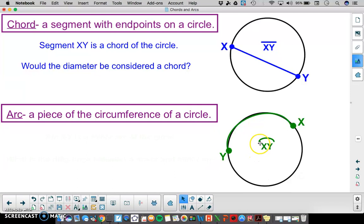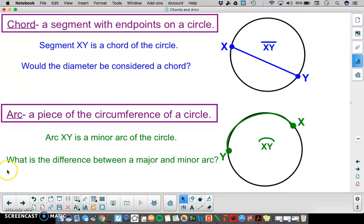We would name it with the arc symbol. So we have the endpoints of the arc X and Y and then the arc symbol. We would describe that arc as a minor arc of the circle. What's the difference between a major and minor arc? I want you to answer that question.